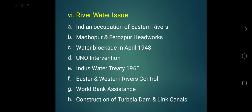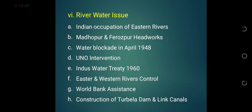Another major problem arose later in 1948 — that was the river water issue. Three major rivers, the Sutlej, Beas and Ravi, flow into Pakistan from the eastern Punjab side. When India got occupation of the eastern parts of Punjab, they got control of the eastern rivers as well. They started controlling the Madhupur and Ferozpur headworks over the rivers Ravi, Beas and Sutlej, and ultimately in April 1948, they blocked the flow of water into Pakistan.